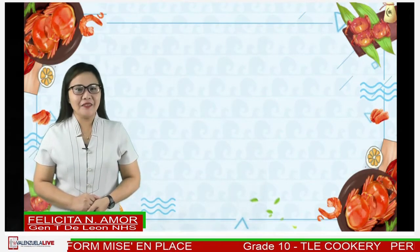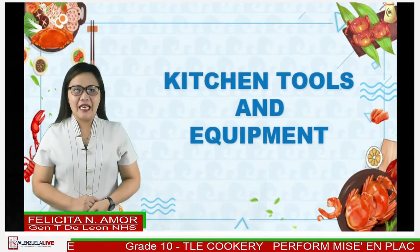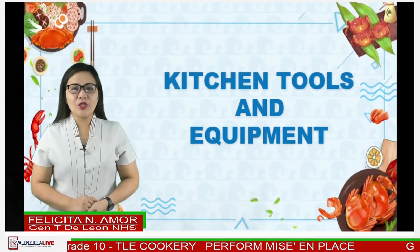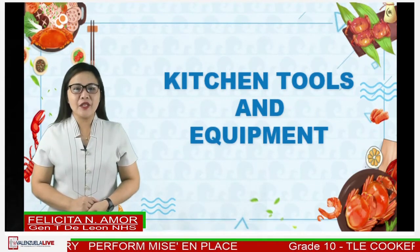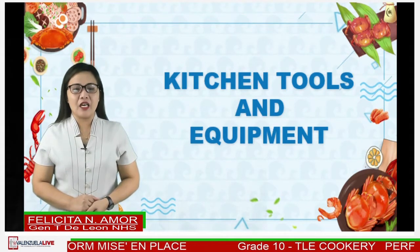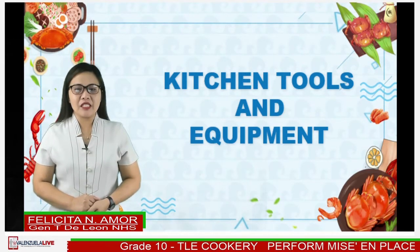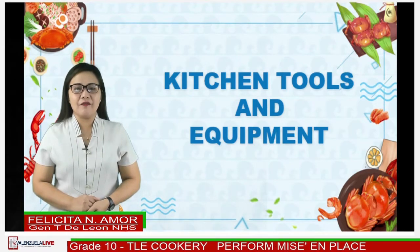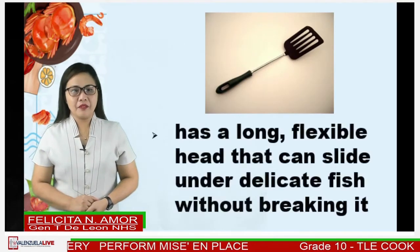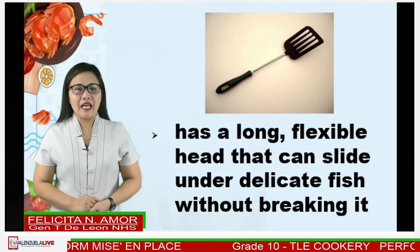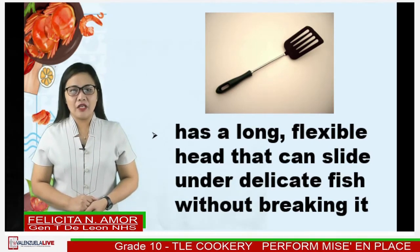To start our lesson: what's the difference between a tool and equipment? A tool can be any item, especially one held in the hand, used to carry out a particular function. Equipment most commonly refers to a set of tools that are used to achieve a particular objective. Different jobs require different kinds of equipment. Some kitchen tools and equipment used in preparing and cooking seafood are the following. Number one: fish turner — it has a long, flexible head that can slide under delicate fish without breaking it. It is also called a fish spatula or flipper.